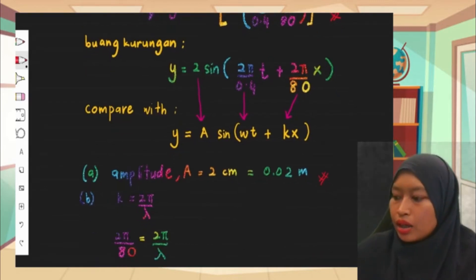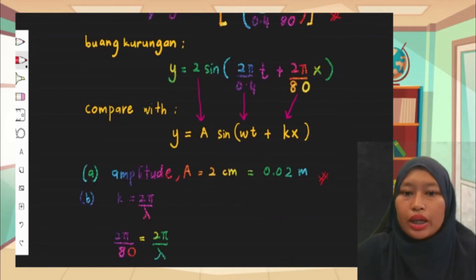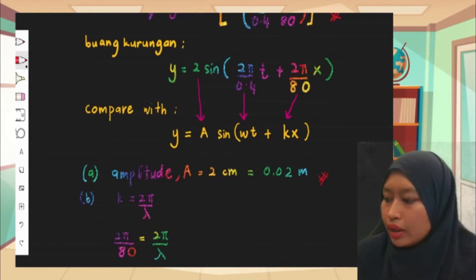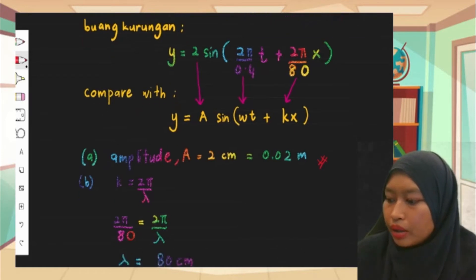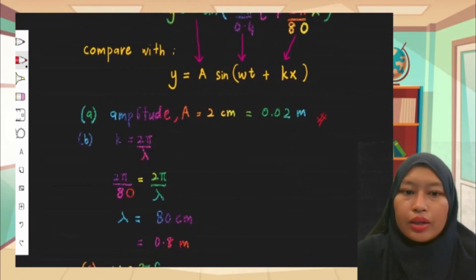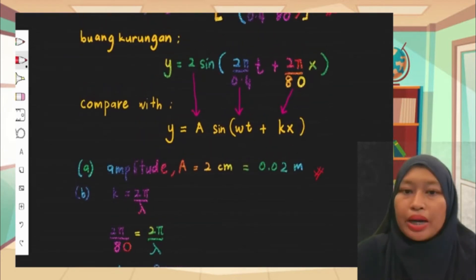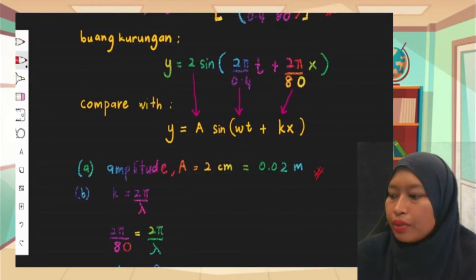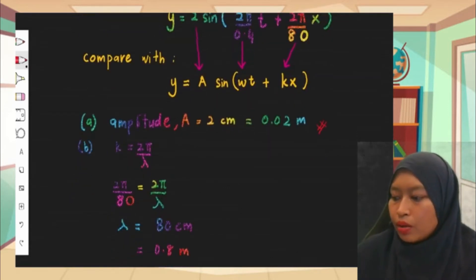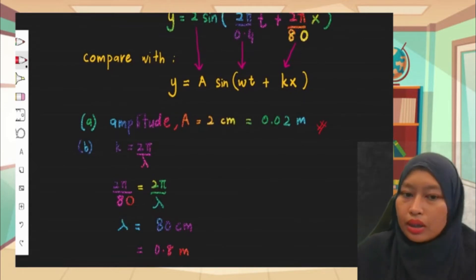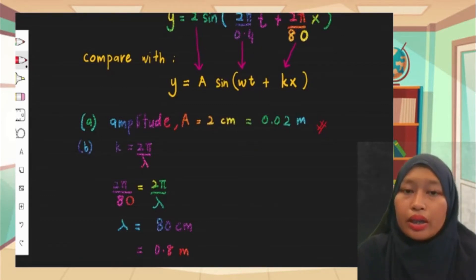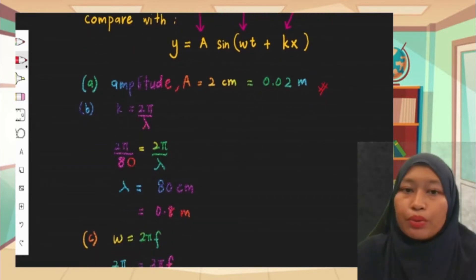So part a: amplitude is obviously 2. In the question the unit is cm, so we convert to SI units — 0.02 m. For part b, the question asks for wavelength. The wave number formula is k = 2π/λ. We have k = 2π/80, so setting 2π/80 = 2π/λ gives λ = 80 cm. Converting to meters: 0.8 m.